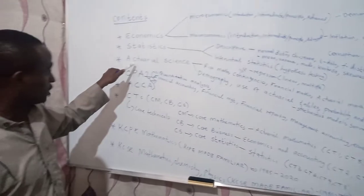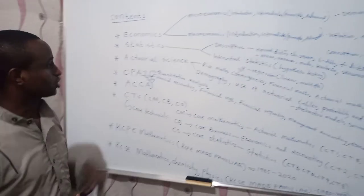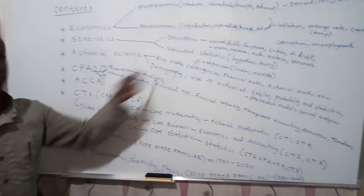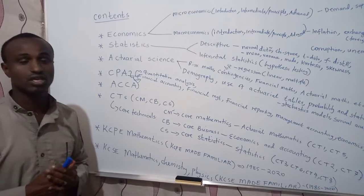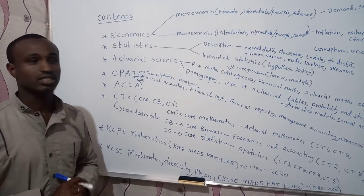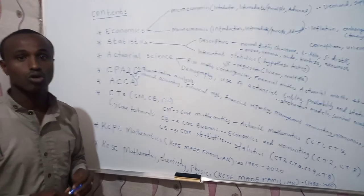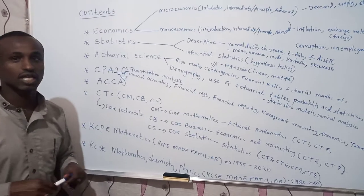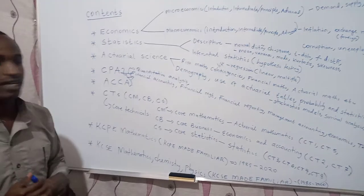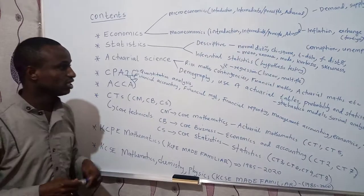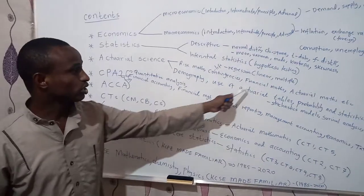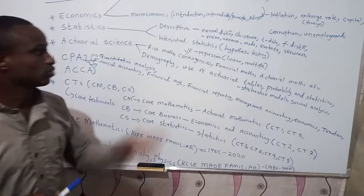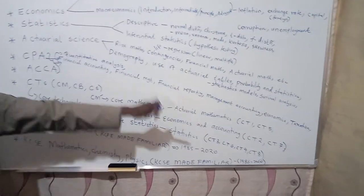Finally and thirdly, I'm going to come to actuarial science, whereby I'm going to deal with risk mathematics — that's more about credibility theory, ruin theory, and models like the Burr distribution and the Pareto distribution, and many other interesting topics. I'm also going to deal with financial mathematics, covering interest rates, the force of interest, and related steps.